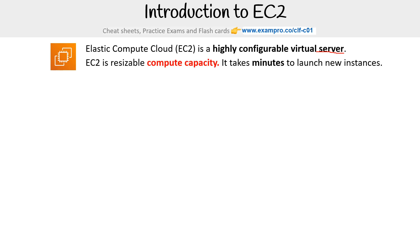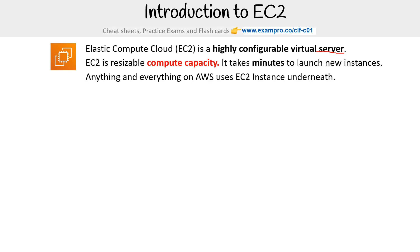EC2 is resizable compute capacity — it takes minutes to launch new instances, and anything and everything on AWS uses EC2 instances underneath. That's why we generally call it the backbone of all AWS services.